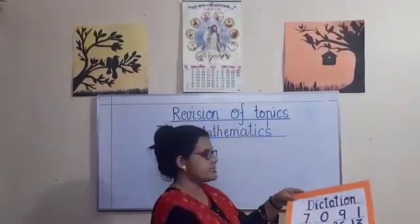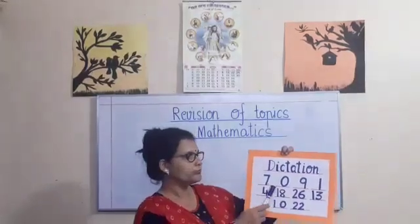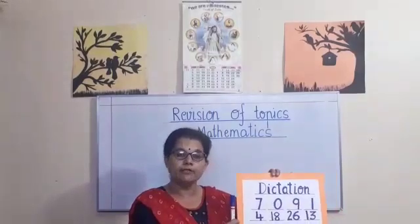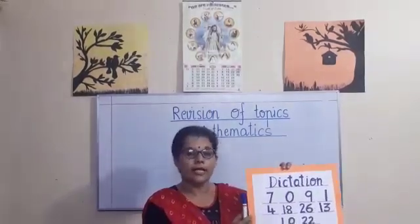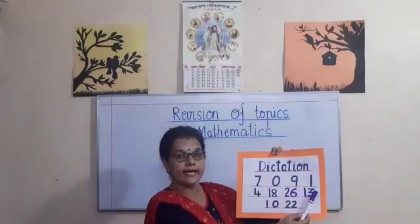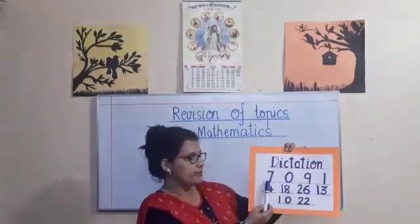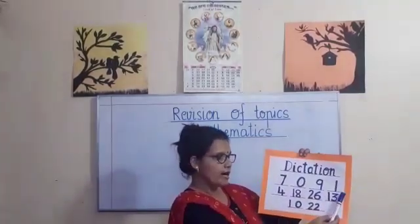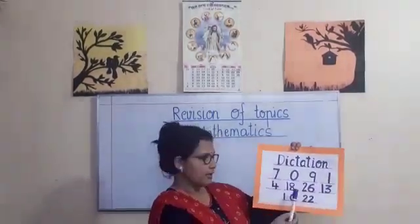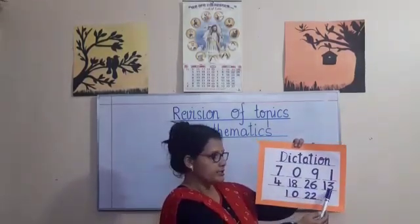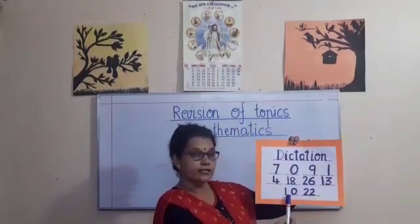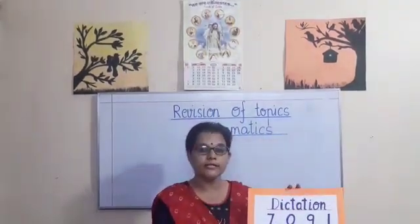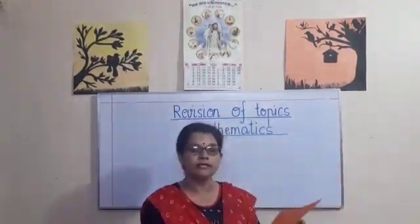The last topic is dictation. Parents, you need to help your children to do this. You can call out any number from between 0 to 30 and help your children to write on the given line. For example, you can call out number 7, 0, 9, 1, 4, 18, 26, 13, 10 and 22. So help them to do this work every day so that they are perfect and thorough with their numbers.